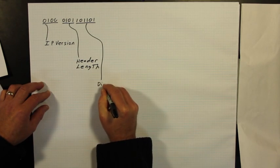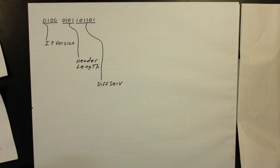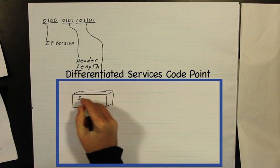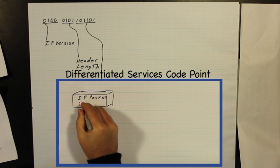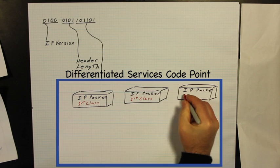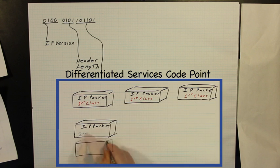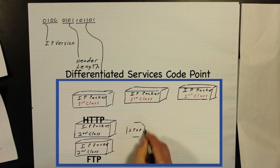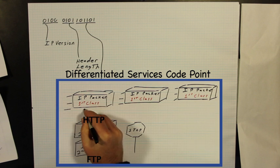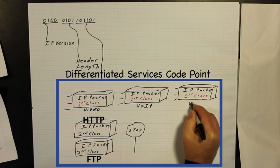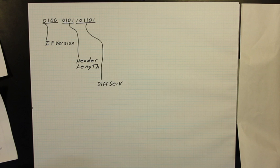DiffServ, or Differentiated Services CodePoint, is how IP packets are differentiated into classes. This governs how the network handles them. Using classes, networks speed up traffic, allowing time-sensitive packets to arrive on time and delaying other non-time-sensitive packets.